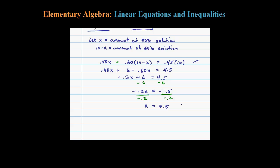Now remember what X is. X is the amount of the 40 percent solution. So the 60 percent solution, all we have to do is take 10 minus X, or 10 minus 7.5, which is going to be equal to 2.5.